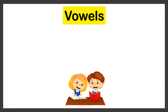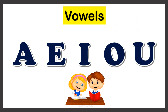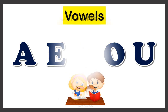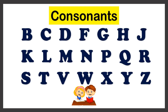English has 26 letters, and 5 of them are called vowels: A, E, I, O, U. Now let's understand what consonants are. The letters other than the vowels are called the consonants.